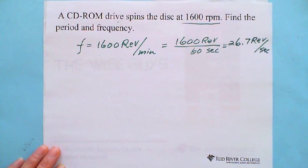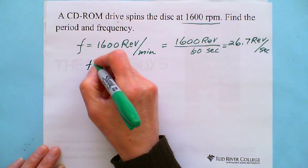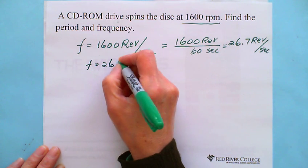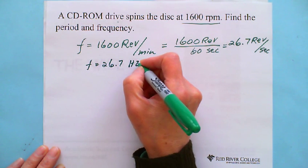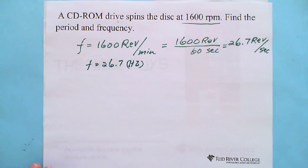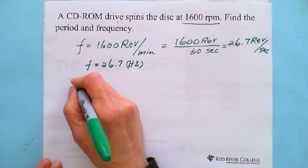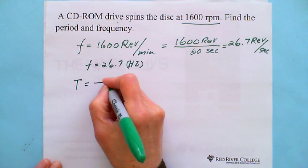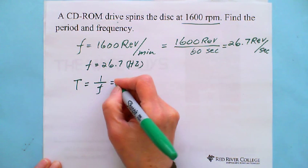And looking for the period, T equals 1 over F, which is 1 divided by 26.7. So reciprocal.